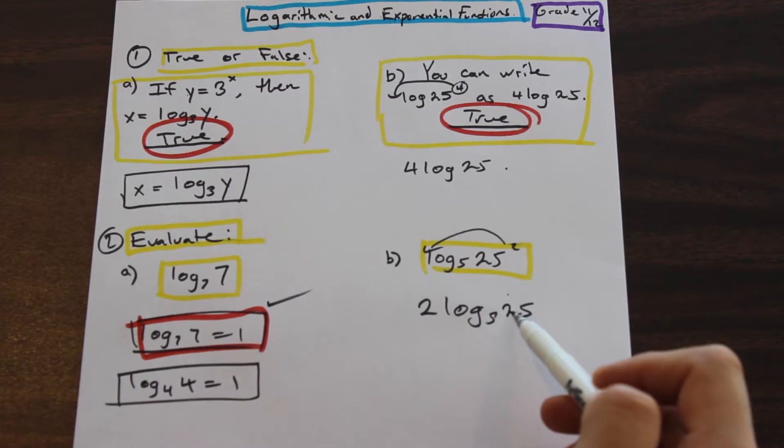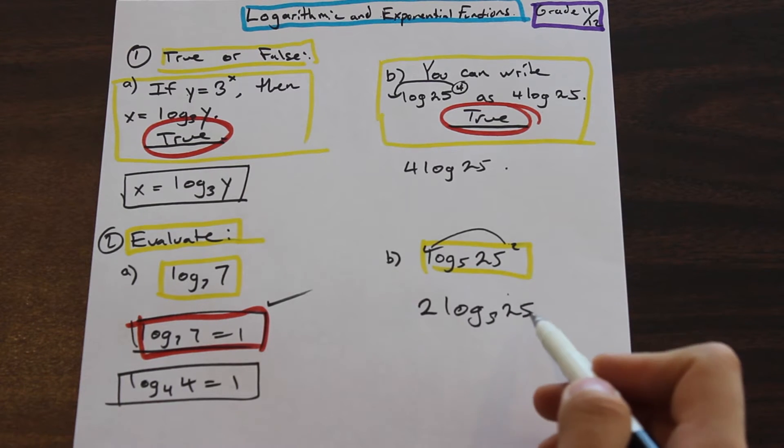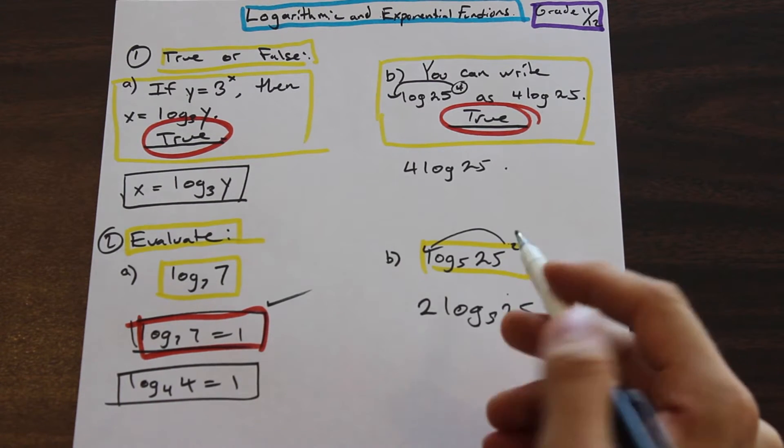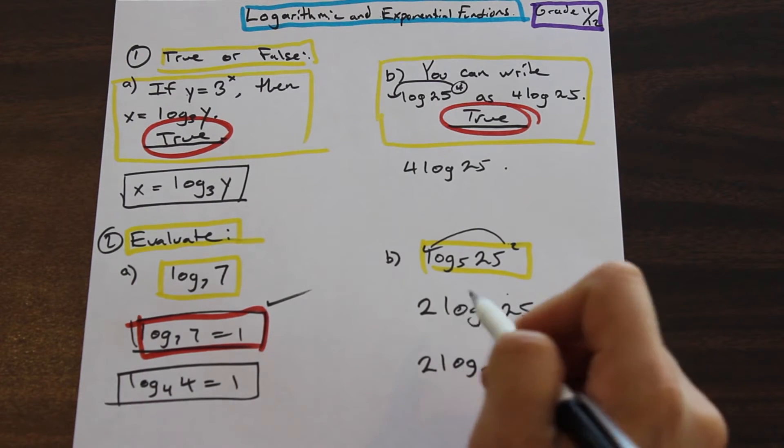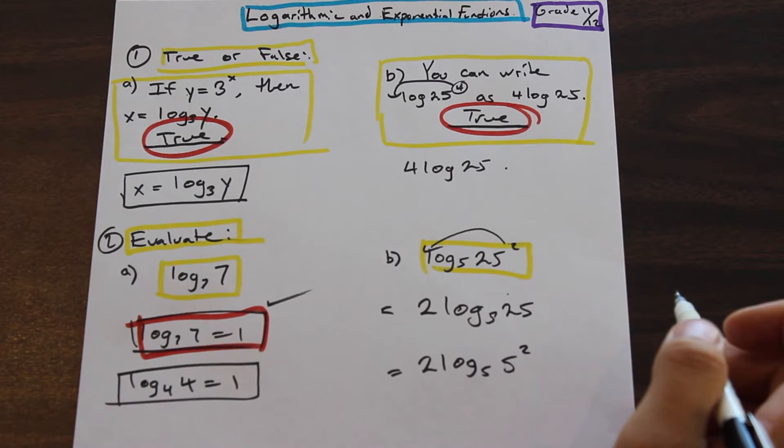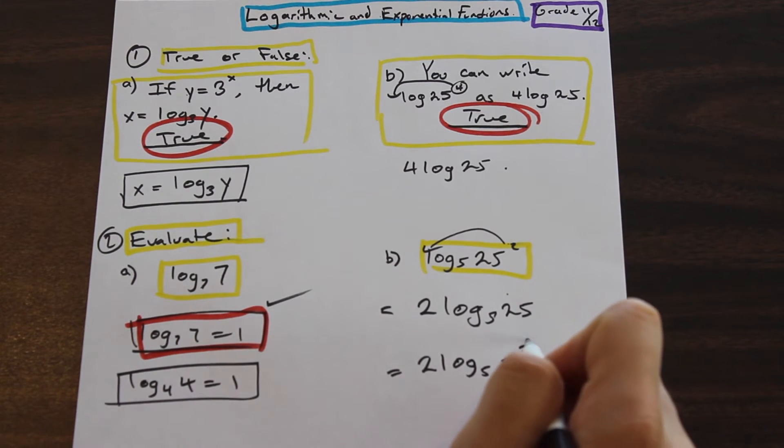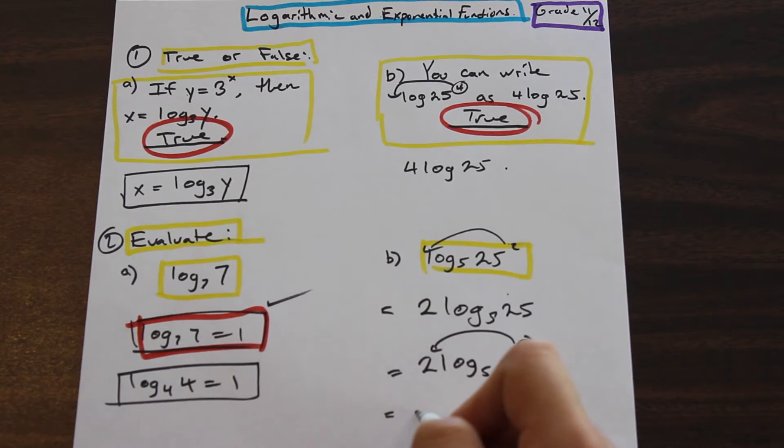And how do we do that with 25? Well, we can rewrite 25 as five squared, right? The square root of 25 is five. So let's go ahead and do that now. So we have two log base five, and we have five squared, right? So five times five. And we can take this - what do we have here? We have a power that we can move to the front. So that's going to be two times two.